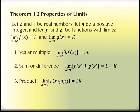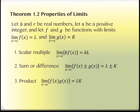A little bit more descriptive now are some properties of limits. b and c are still real numbers, n is still a positive integer. f and g are functions and they have specific limits. The limit of f of x as x approaches c is L, and the limit of g of x as x approaches c is K. The scalar multiple property says that if you have b multiplied by f of x, it's the same as b multiplied by the limit of f of x, which was L — so you get b times L.